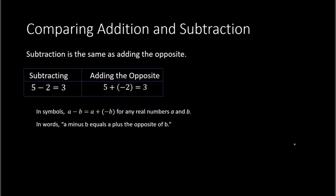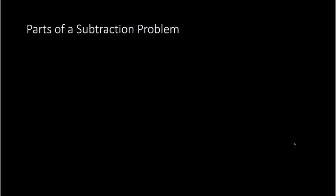Now as we get into subtraction problems, it is good to know the different parts of a subtraction problem. So here if you had 8 minus 5 equals 3, the 8 is called the minuend, the 5 is called the subtrahend, and the 3 is called the difference. You don't see these terms too often except for the word difference, which you definitely need to know because you will see that all the time. So if you see the word difference, think subtraction.